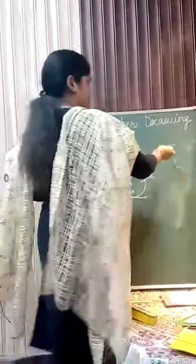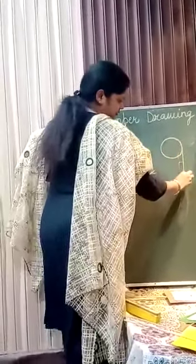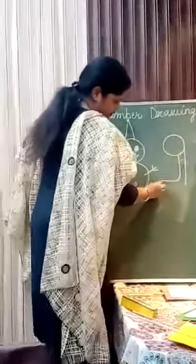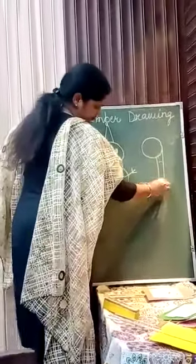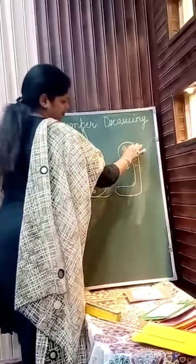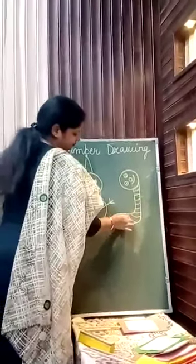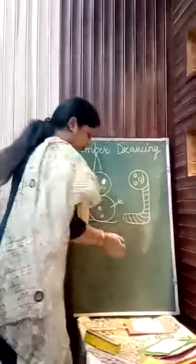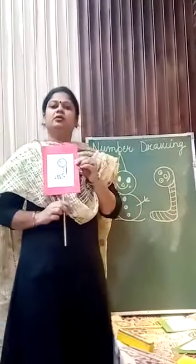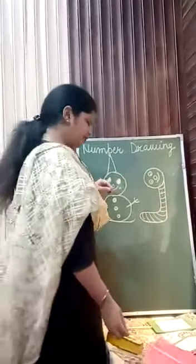Now number 9. First write number 9 — write this. Now this is a caterpillar, children. Like this, children — this is caterpillar. And you can see it like this also. Alright? This is caterpillar.